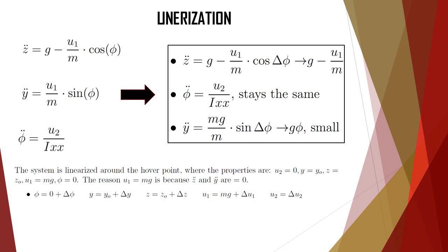With that being said, we can then perform a small angle approximation. The phi is 0, so we can add delta phi to that and we add delta values to the y, the z, the u1 and the u2 as well. When we plug these values into our equations, we get z double dot equals g minus u1 over m. Phi double dot stays the same and y double dot equals g phi.